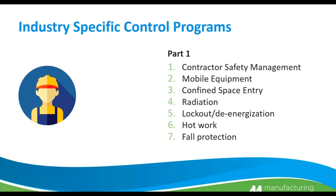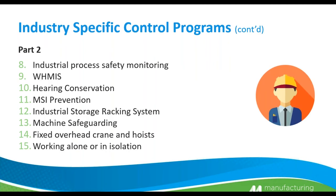Here are the first seven of industry specific control programs: contract safety management, mobile equipment, confined space entry, radiation, lockout and de-energization, hot work, and fall protection. Additional ones include industry specific process safety monitoring, WHMIS, hearing conservation, MSI prevention, industrial storage racking systems, machine safeguarding, fixed overhead cranes and hoists, and working alone. We will be breaking each one of these down into further detail later in the webinar.